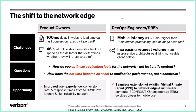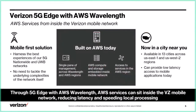By reducing non-deterministic internet hops you deliver a more performant user experience. A sheer 100 milliseconds in delay can affect conversion rates by as much as seven percent. We asked ourselves: how do you optimize application logic for the network, and can the network finally become an asset for Kubernetes applications? We believe the answer is yes — without requiring you to learn the nuances of 5G. Just use the cloud platforms you know and love.